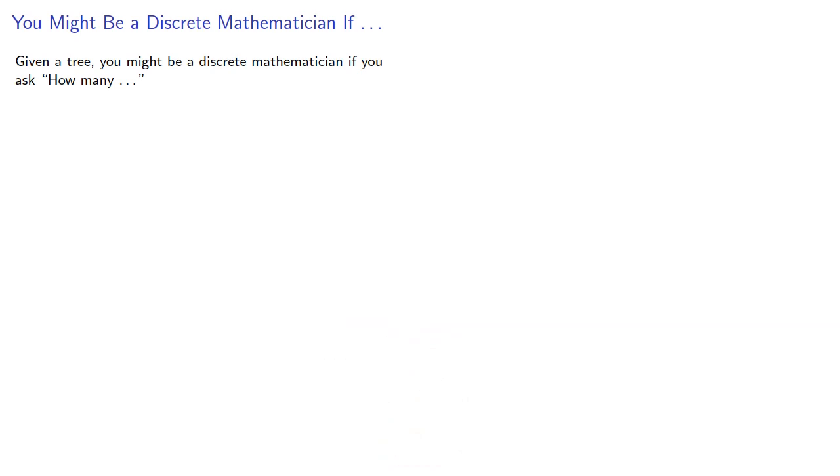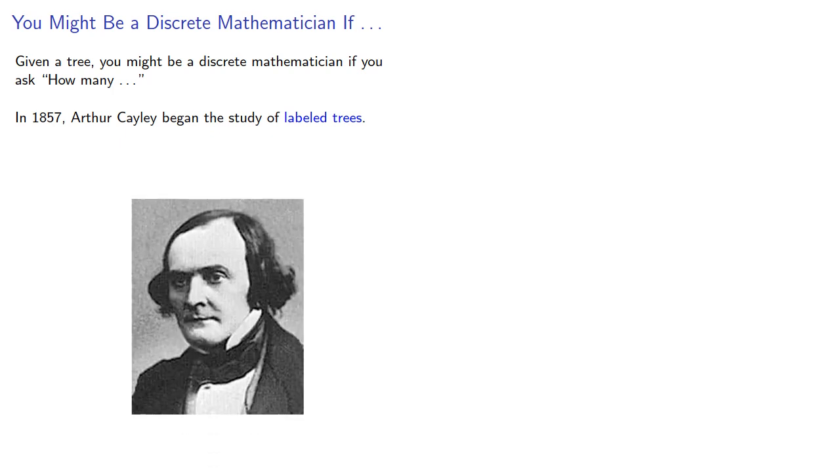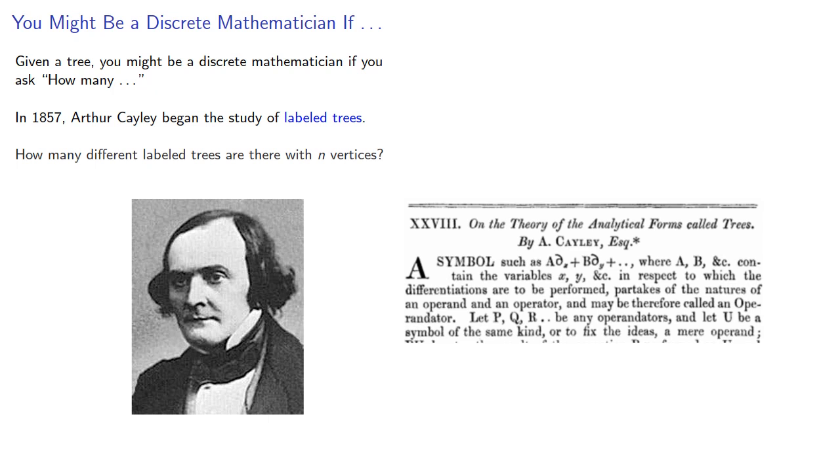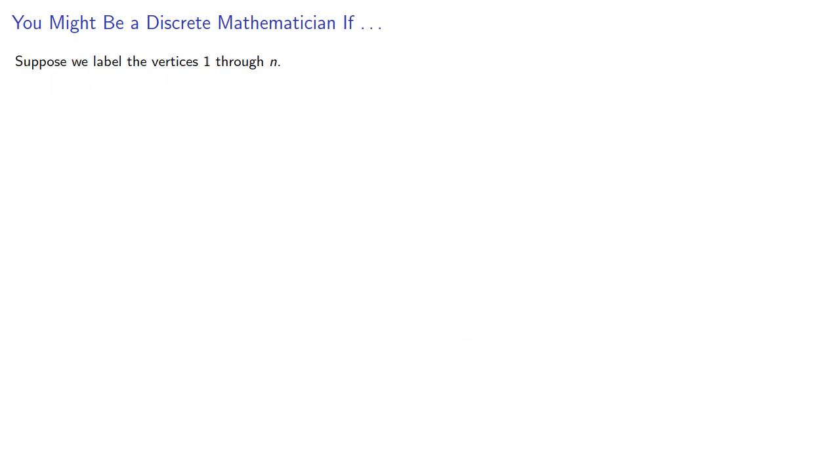Given a tree, you might be a discrete mathematician if you ask, how many? In 1857, Arthur Cayley began the study of labeled trees. How many different labeled trees are there with n vertices? Suppose we label the vertices 1 through n. How many distinct labelings can we produce?